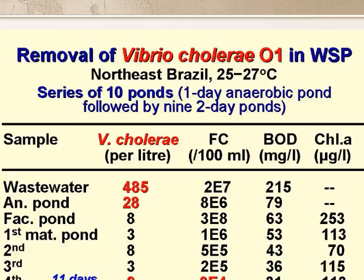At this point the faecal coliform count was 60,000 per 100 ml. It's clear that most Vibrio cholerae are removed in the anaerobic pond — but why? To answer this we did some lab work in Brazil and found that V. cholerae is very sensitive to quite low sulphide concentrations, about 3 mg per litre. In anaerobic ponds the sulphide concentration is about 10–12 mg per litre, so there's more than enough to kill off most of the cholera Vibrios.